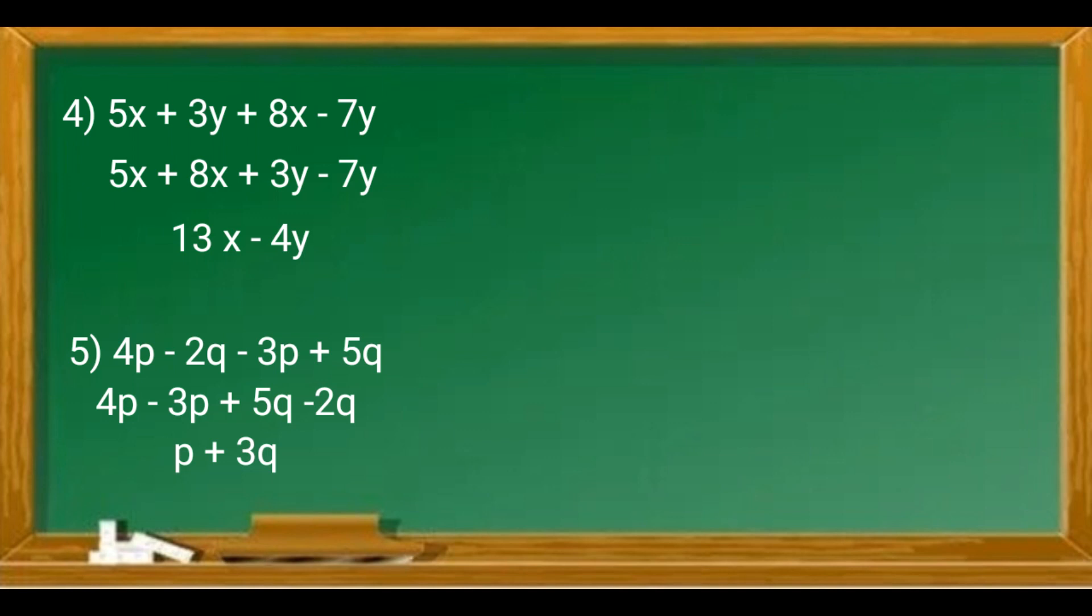The answer is p + 3q. Example 6: 4a³ - a - a³ + 5a. We put all the like terms together: 4a³ - a³ + 5a - a.